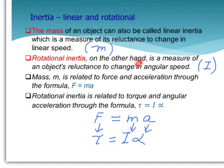Rotational inertia, on the other hand, is a measure of an object's reluctance to change its angular speed, symbolized by I.